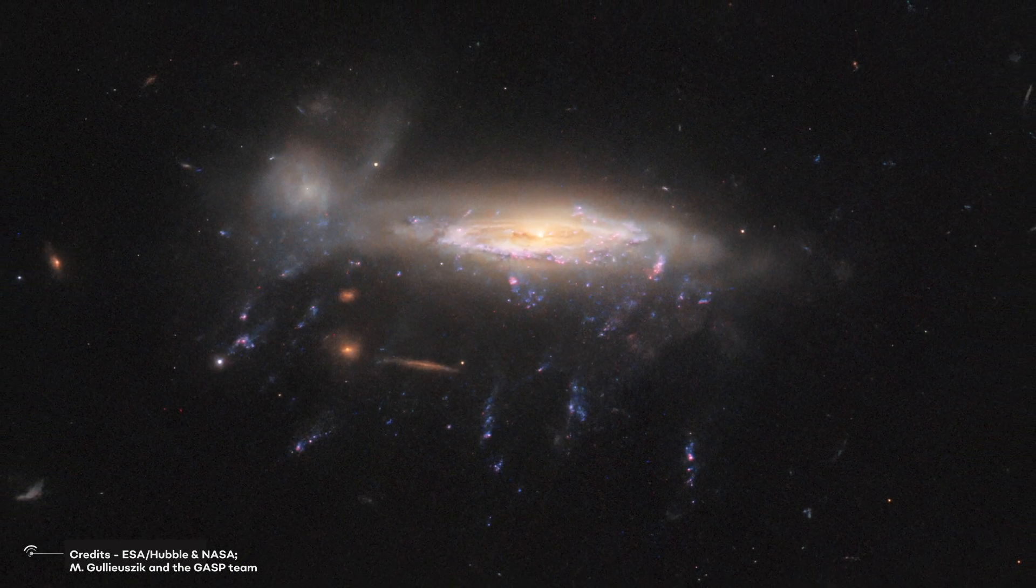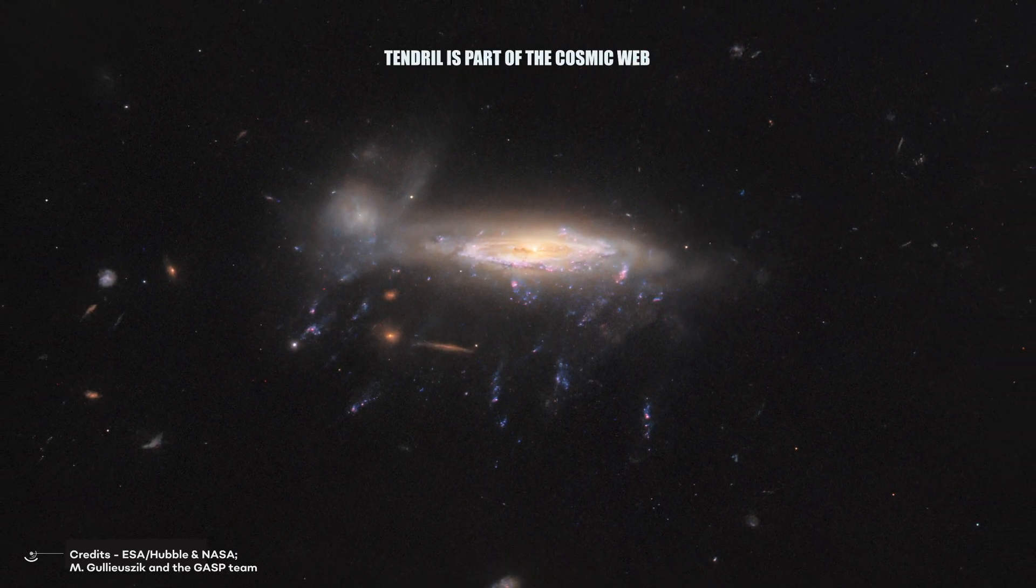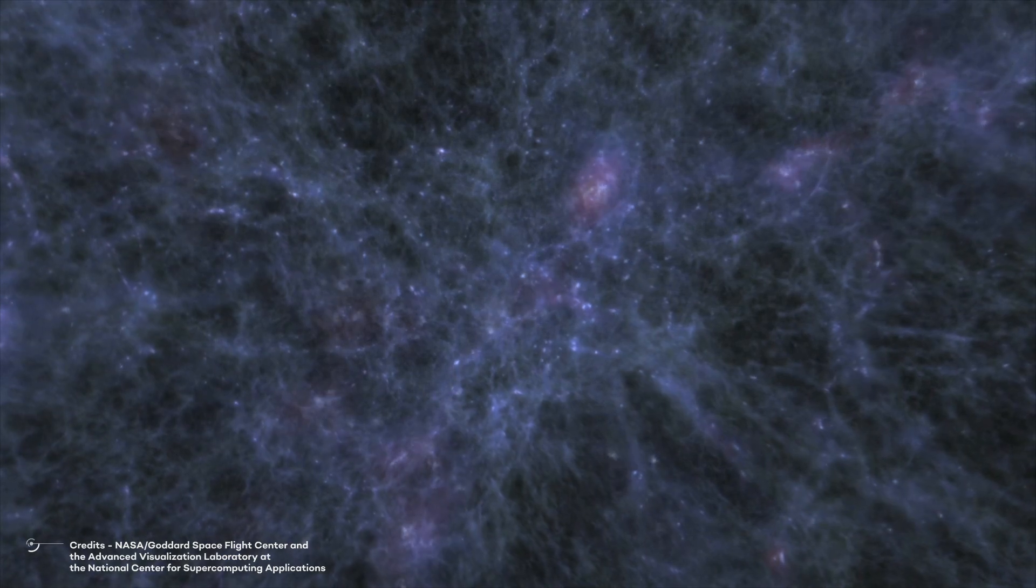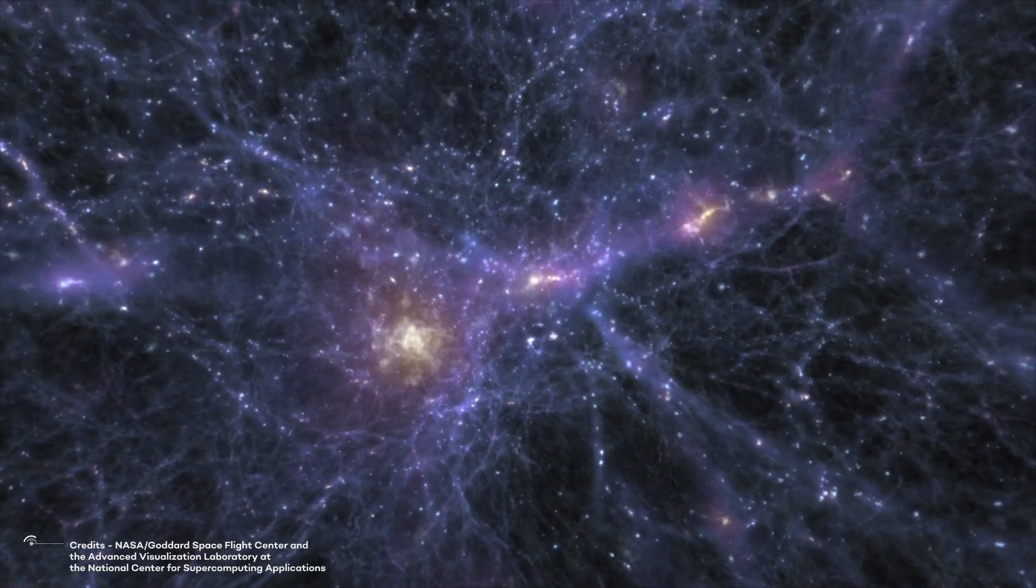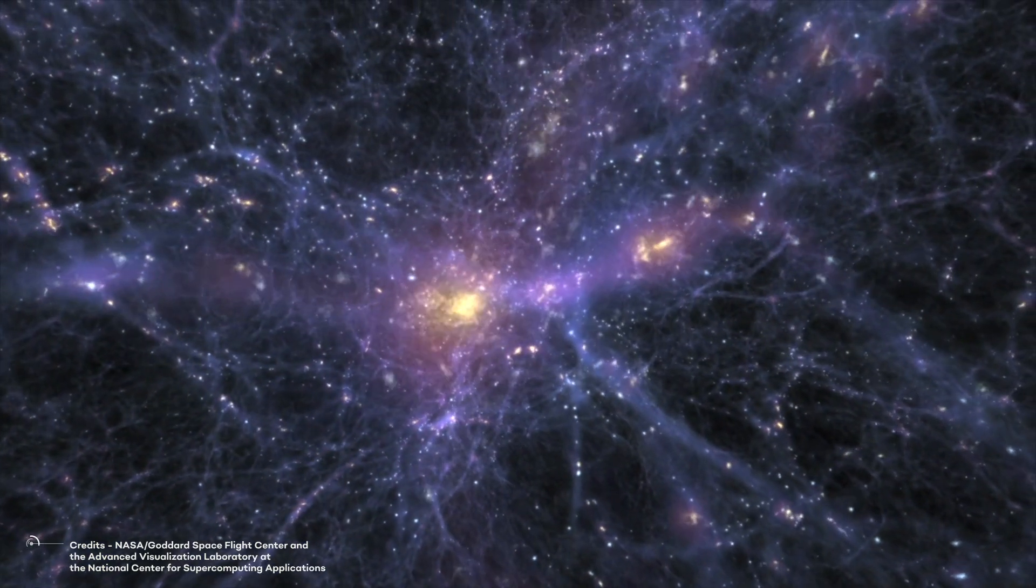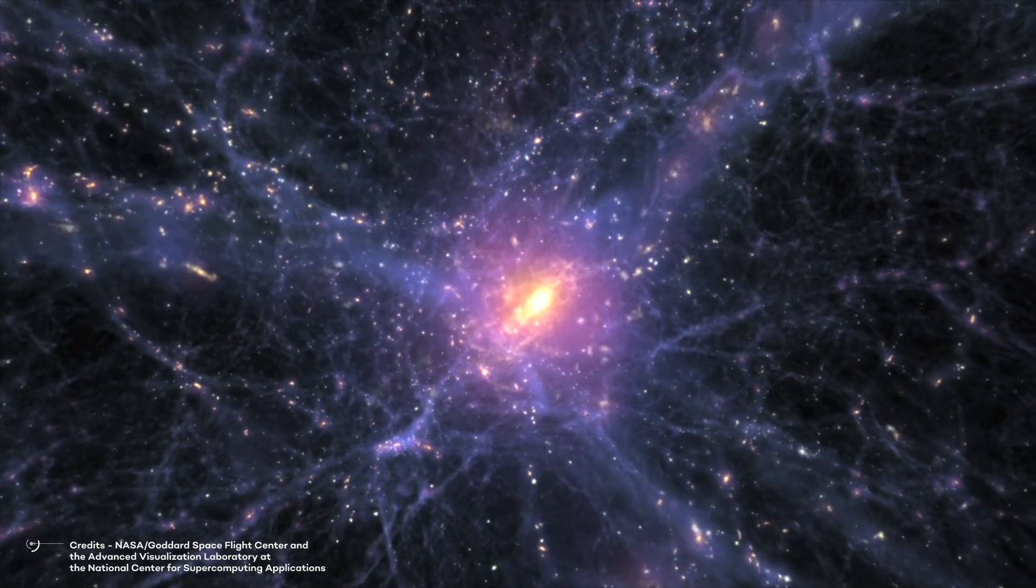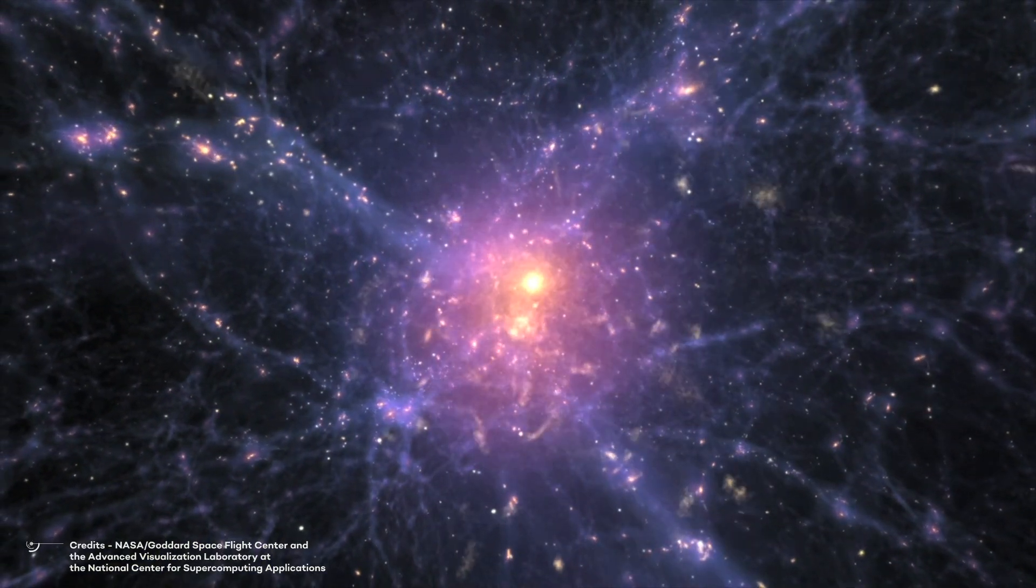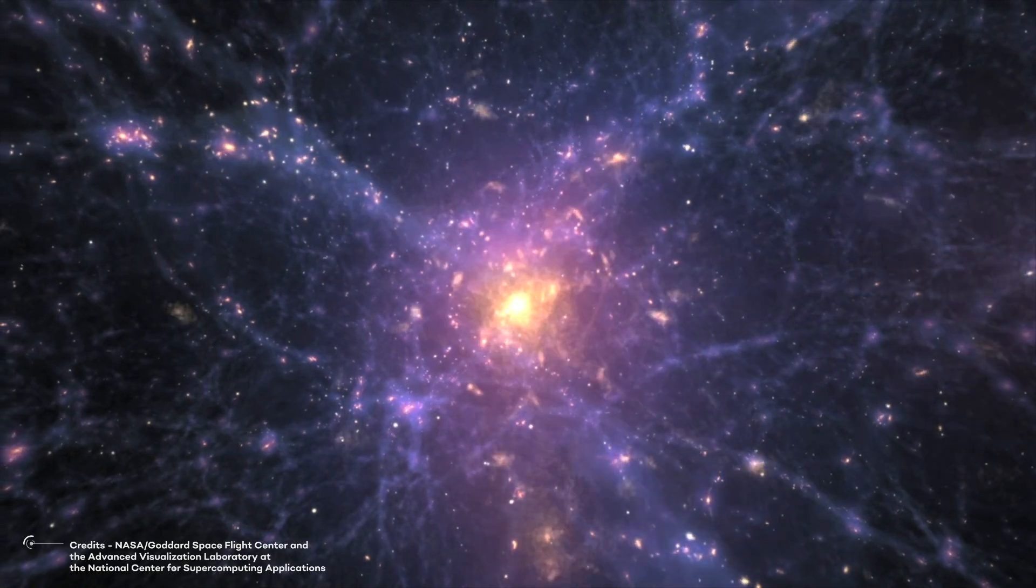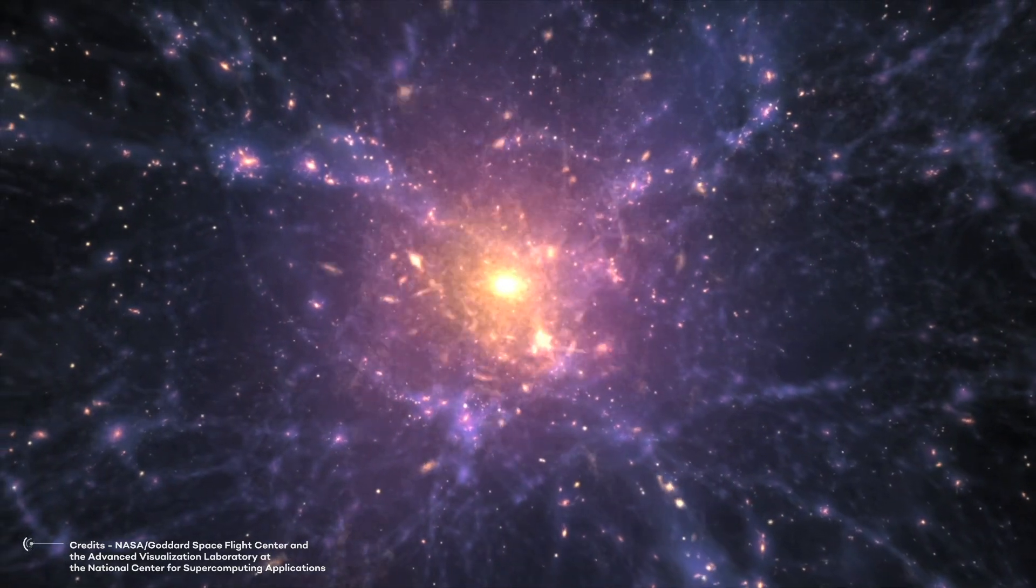But here's the really exciting part. The researchers also found evidence that the tendrils are part of the cosmic web. This is a vast network of invisible interconnected filaments that stretch across the entire universe. It's thought that these filaments are responsible for connecting galaxies together and helping to shape the large-scale structure of the universe. The discovery of this tendril provides some of the first direct evidence that the cosmic web is not just a theoretical concept, but a real, physical structure that can be observed and studied. And it also provides new insights into how galaxies form and evolve over time.